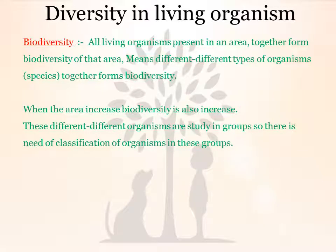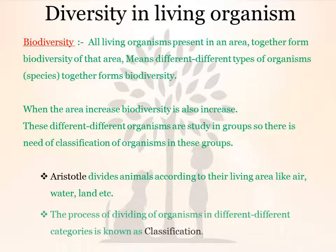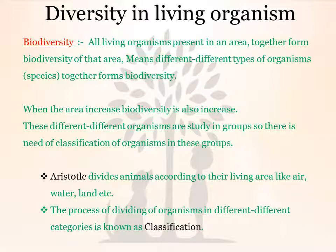These different organisms are studied in groups, so there is a need for classification of organisms into groups. For example, if we want to study cows, we don't need to study many different cows — we study a single cow which represents the complete group of cows. Aristotle divided animals according to their living area: those living in air, water, or on land were each categorized in different groups. The process of dividing organisms into different categories or groups is known as classification.